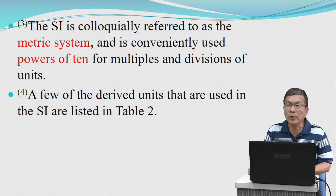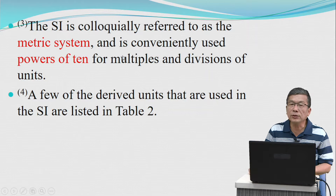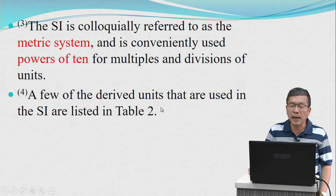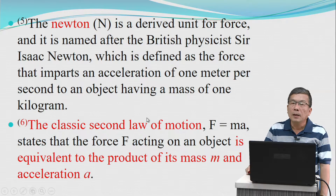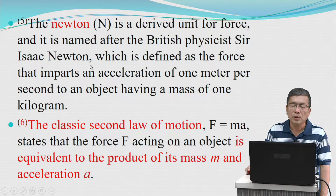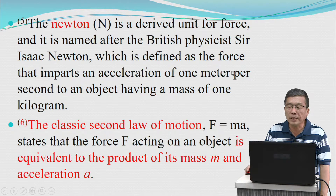The SI is colloquially referred to as the metric system, and it conveniently uses powers of 10 for multiples and divisions of units. A few of the derived units used in the SI are shown in Table 2. The Newton is the derived unit for force and is named after the British physicist Sir Isaac Newton, defined as the force that imparts an acceleration of one meter per second squared to an object having a mass of one kilogram.